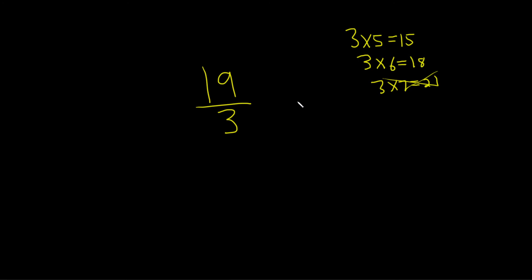So the biggest number of times that it goes into 19 is 6. Because 3 times 6 is 18. So that's the whole number part.